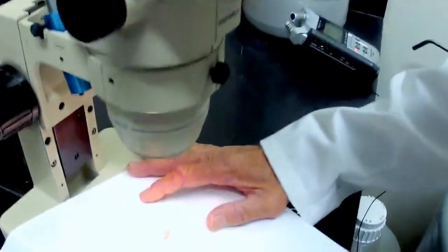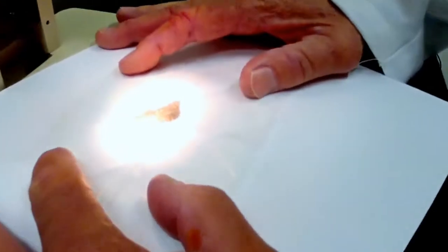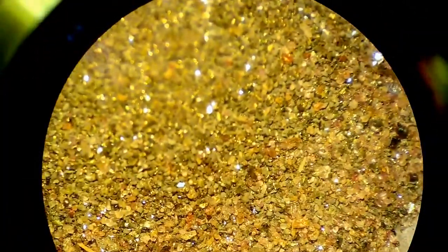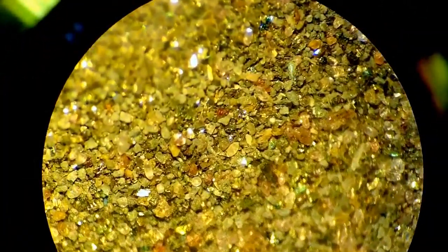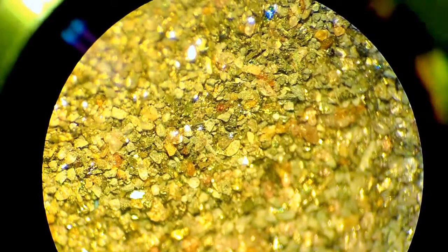We're going to do some acid washing. We've got a sample here that has a great deal of pyrite in it. So we're going to take some nitric acid and some water in solution, put it on a hot plate, and we're going to dissolve the pyrite.